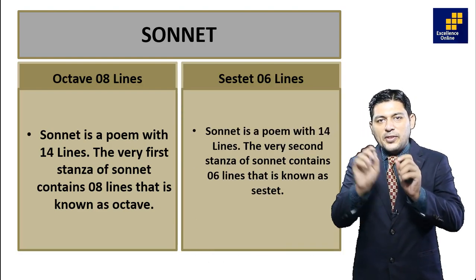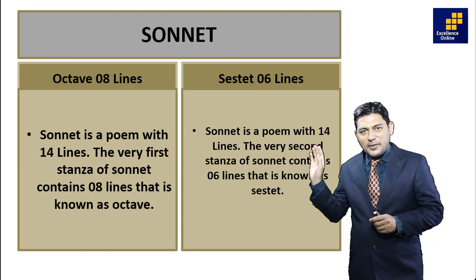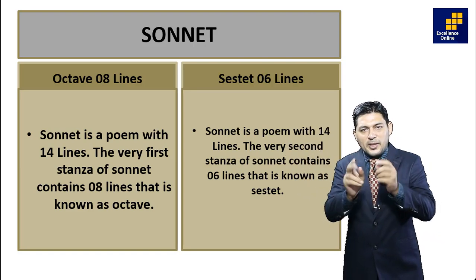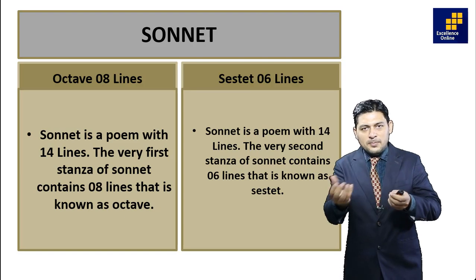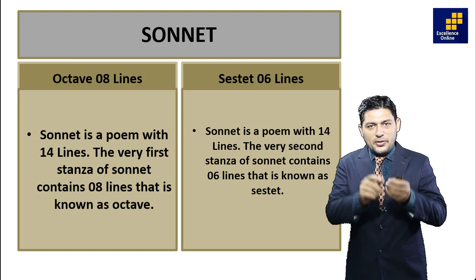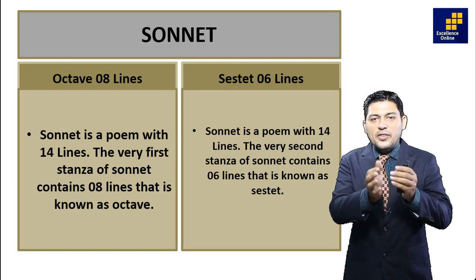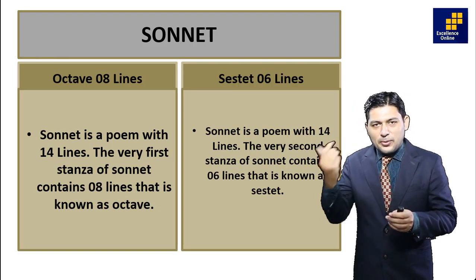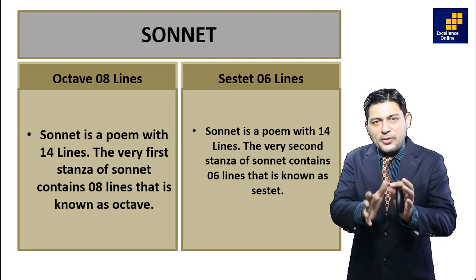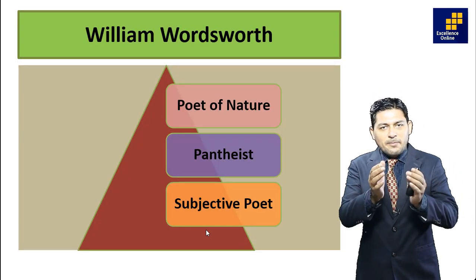Now discussing the structure of the sonnet: it has two stanzas. Stanza one consists of eight lines, which we call the octave. Stanza two consists of six lines, which we call the sestet.